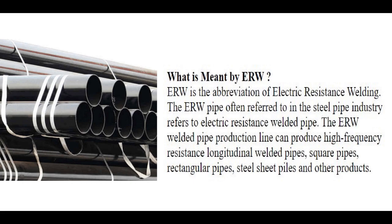Electrical resistance weld pipe is manufactured by cold forming a flat steel strip into a round tube and then passing it through a series of forming rollers to obtain a longitudinal seam. The two edges are then simultaneously heated with a high frequency current and squeezed together to form a bond. The longitudinal ERW seam does not require filler metal.